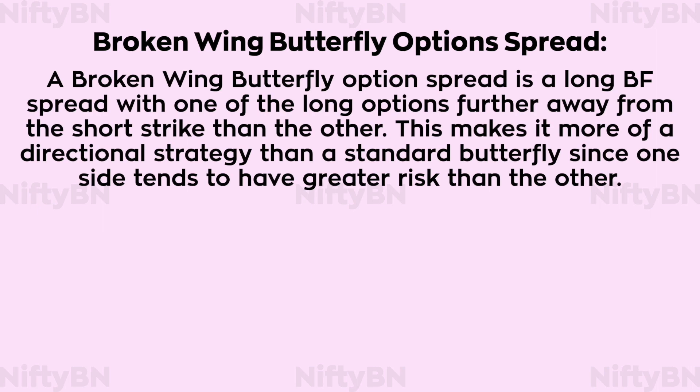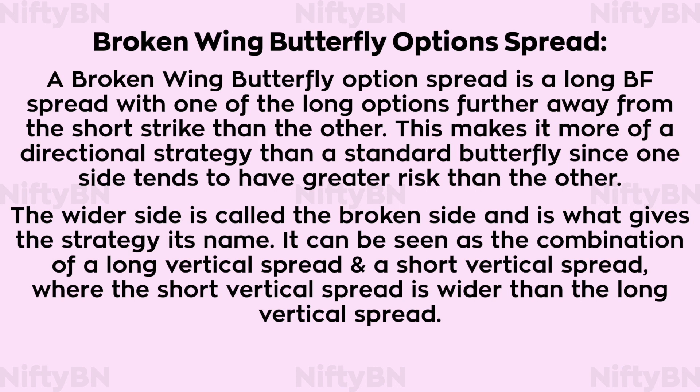A broken wing butterfly option spread is a long butterfly spread with one of the long options further away from the short strike than the other. This makes it more of a directional strategy than a standard butterfly, since one side tends to have greater risk than the other. The wider side is called the broken side and is what gives the strategy its name. It can be seen as the combination of a long vertical spread and a short vertical spread, where the short vertical spread is wider than the long vertical spread.